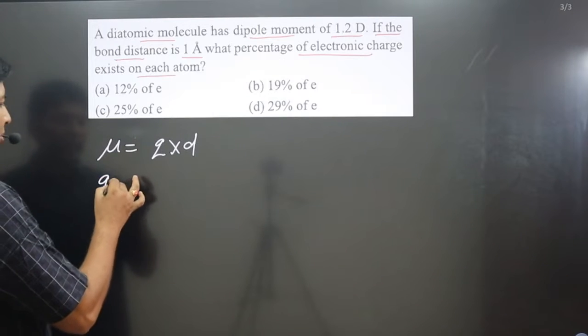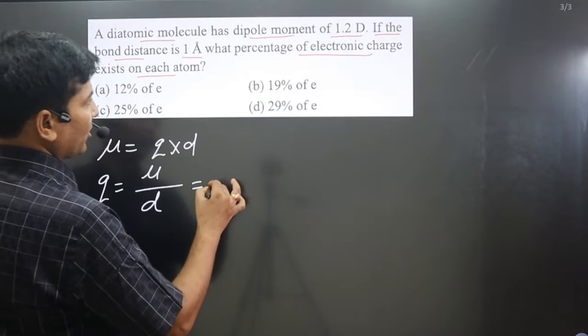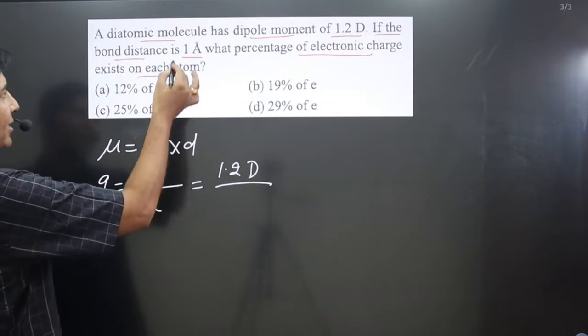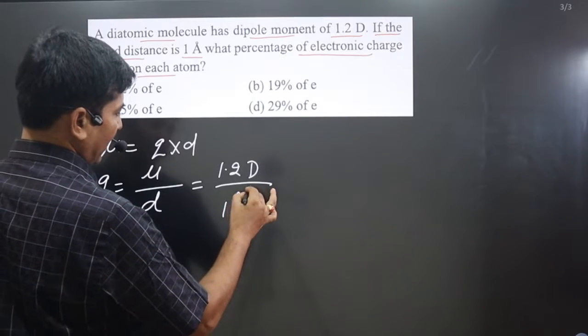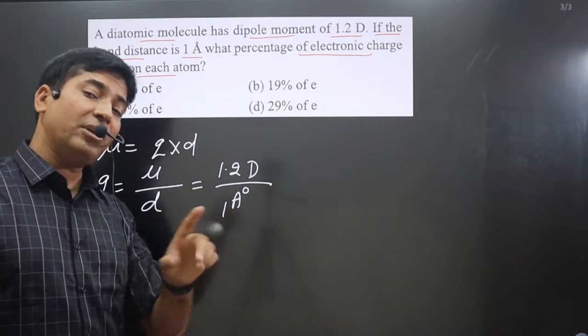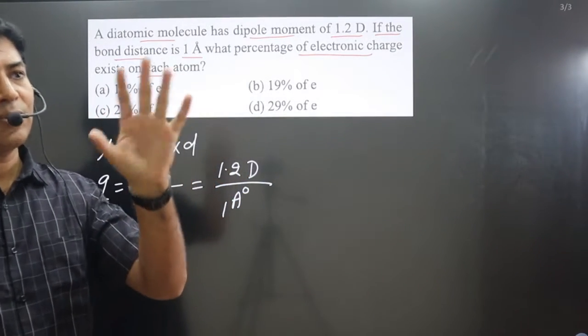Q value can be calculated because mu value is given and distance value is also given there. Mu value is given 1.2 and it is Debye and it is divided by distance is what? 1 angstrom is there. Now this angstrom can be converted into meter and Debye can also be converted in terms of meter.